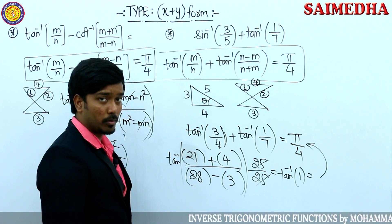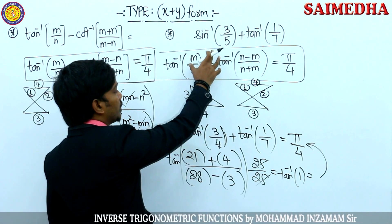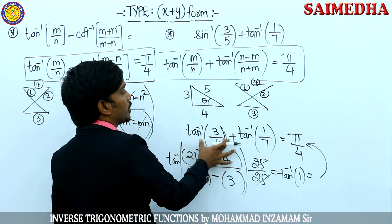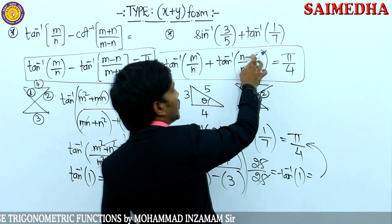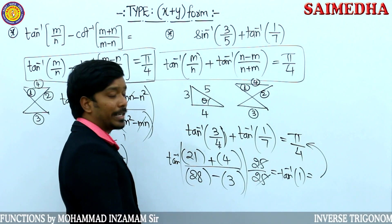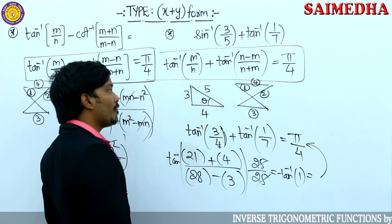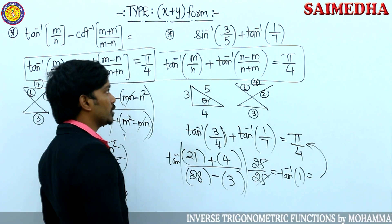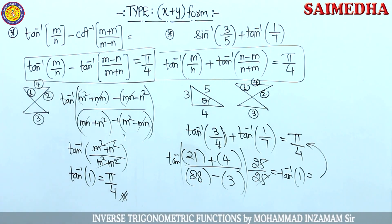That is how you are going to solve the problem. When the question is in the format m/n + (n minus m)/(n plus m), the answer directly comes as π/4. Pause the video and note it down.